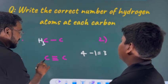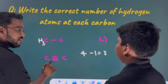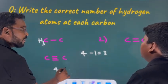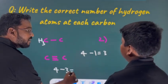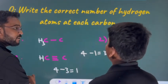Yes sir. And at this carbon, how many bonds are already there? 3. So, 4 minus number of bonds are already present? 3. Is equal to? 1. So, number of hydrogens are 1. Write 1 hydrogen.